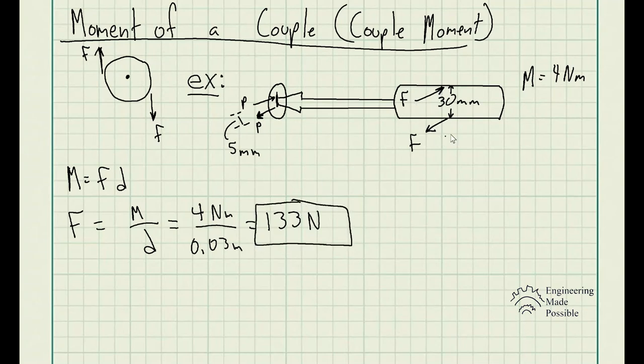One on this side, the other one on this side. So for a couple moment, the D is the distance between these two equal and opposite forces. The same goes for P. So our P is equal to the moment. And since the moment is the same, when you're looking at the handle or when you're looking at the screw itself, the moment stays constant.